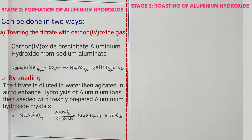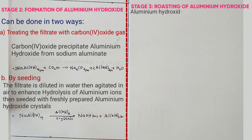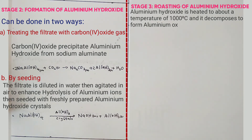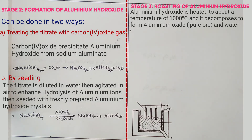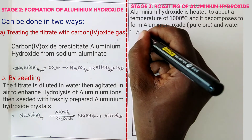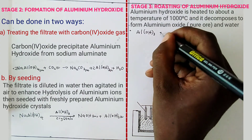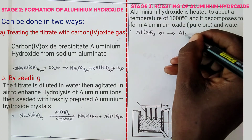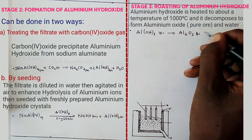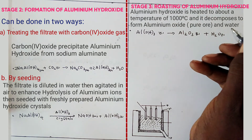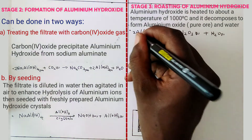Stage 3 is roasting of aluminium hydroxide at about 1000 degrees Celsius, where it decomposes to form aluminium oxide and water — that is now pure bauxite. The equation is: 2Al(OH)3(s) → Al2O3(s) + 3H2O(l). To balance the equation, place 2 here, 2 here, and 3 here.